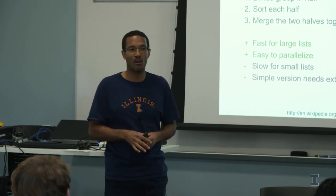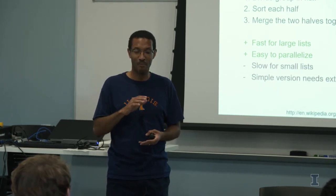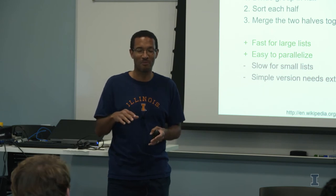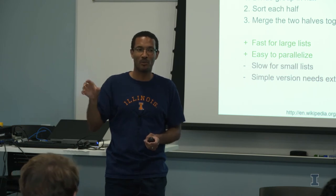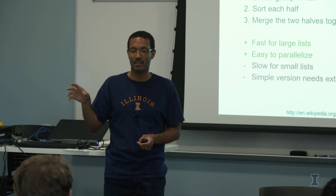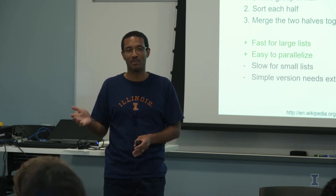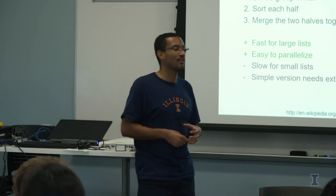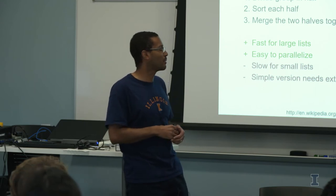This algorithm is very fast for large lists — it's O(n log n). If you have a million elements, that's 10^6 times log(10^6), which is about 12, so roughly 12 million steps instead of a million squared steps. That's a huge improvement. O(n log n) will beat O(n²) when you have a large number of elements.